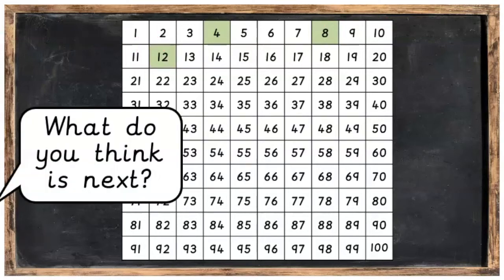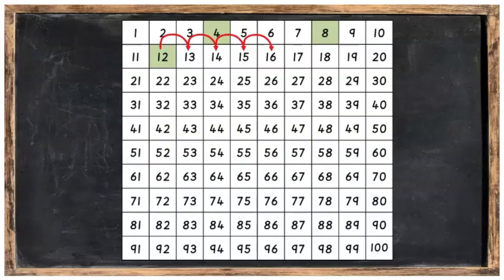What do you think is next after this? Hop on four more. Well done, we're going to land on sixteen. After sixteen, we'll land on twenty. Hop four more, we'll land on twenty-four.